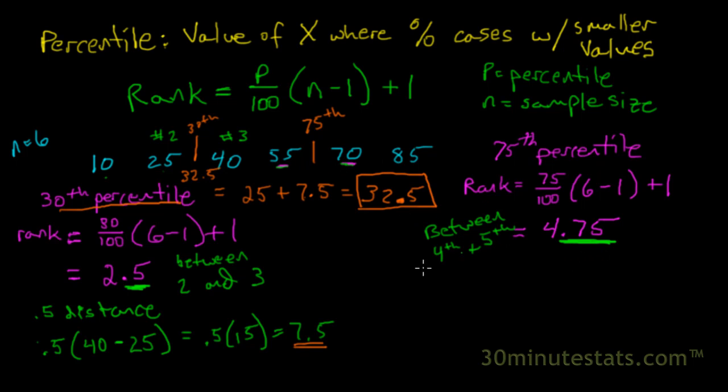3 quarters of the distance between 55 and 70. We can go ahead and calculate this as 0.75 distance. We can calculate this as 0.75 times 70 minus 55. We'll subtract the 4th observation from the 5th observation. So we get 0.75 times 15, which is going to be 11.25.